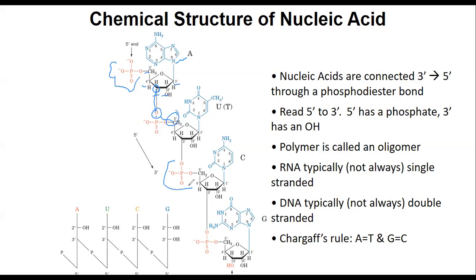When we read DNA or RNA in any sequence, it is always printed five prime to three prime. That's how we read it and how most enzymes read it. There are some enzymes that go backwards, but generally it goes five prime carbon all the way to three prime carbon. At the three prime end, you have an OH.